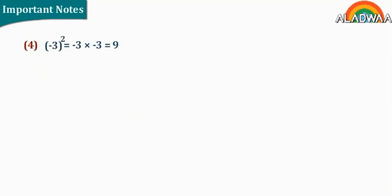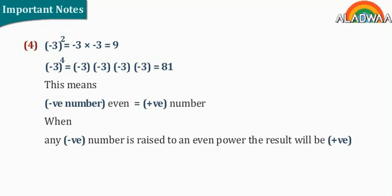Number 4: negative 3 to the power 2 equals negative 3 times negative 3, which equals 9. And negative 3 to the power 4 equals the repeated multiplication of negative 3 for 4 times, which equals 81. This means when a negative number is raised to an even power, the result will be a positive number.